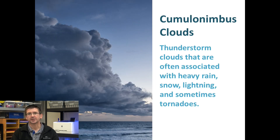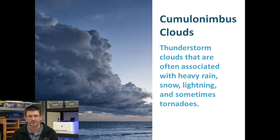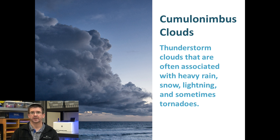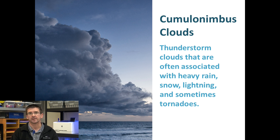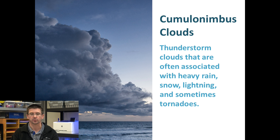When cumulus clouds collect enough water, they begin to appear darker in the sky and turn into what are called cumulonimbus clouds. Cumulonimbus clouds are tall, towering, gray clouds that are fairly puffy but look much darker. These will usually result in very heavy rain, as well as severe weather and thunderstorms.